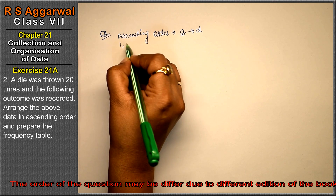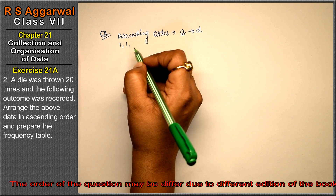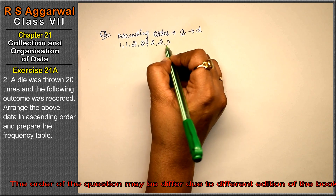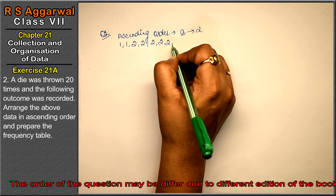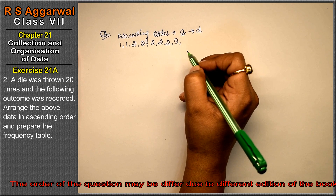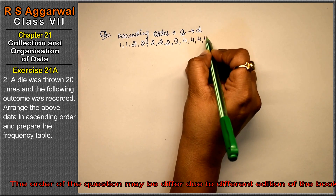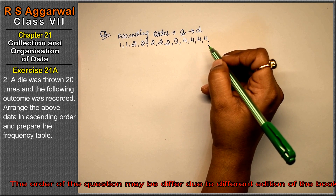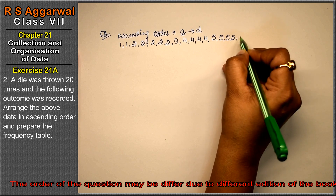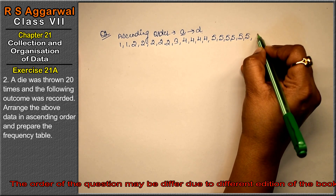The smallest number is 1 — it appears 2 times. Next is 2, which appears 5 times. Then 3 appears 1 time. 4 appears 4 times. 5 appears 6 times. And 6 appears 2 times.